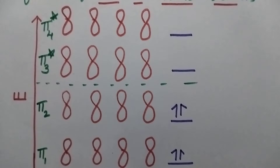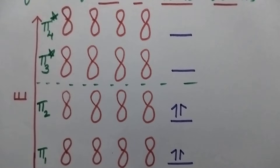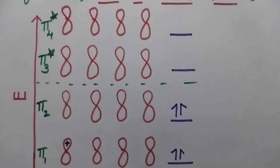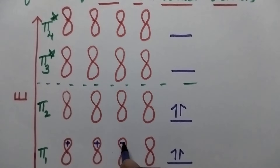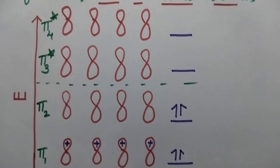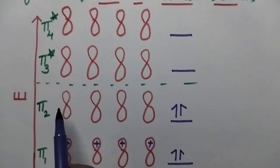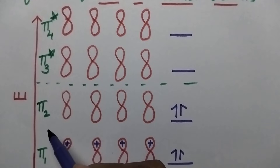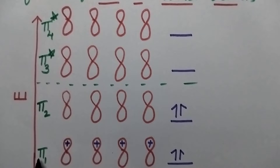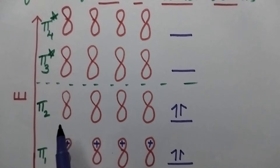Coming to the pi molecular orbital diagrams, the molecular orbital with the lowest energy will not have any nodal plane, meaning all the p orbitals are symmetrical to each other. So the number of nodal planes in π1 is equal to 0. As the energy increases, moving from π1 to π2, one nodal plane will be added. So in π1, the number of nodal planes is 0, and in π2, one nodal plane will be present.